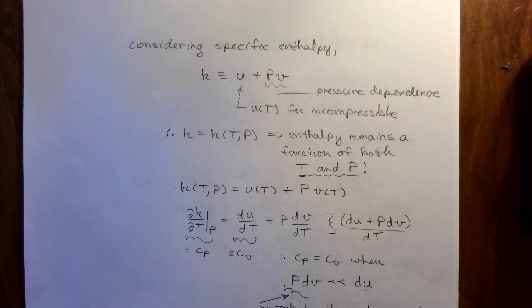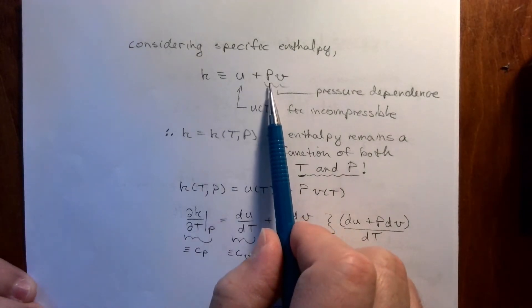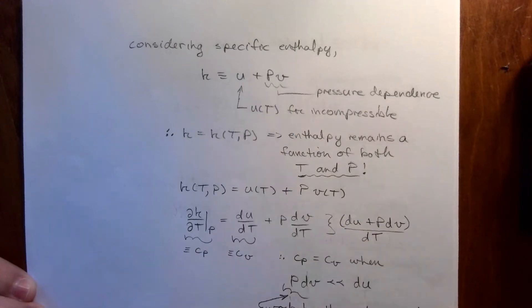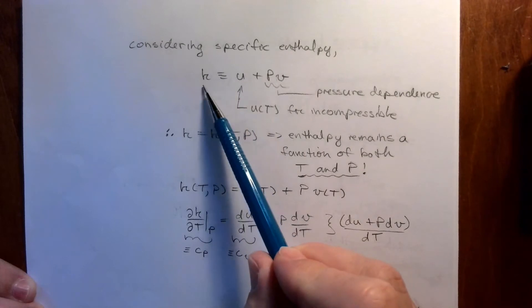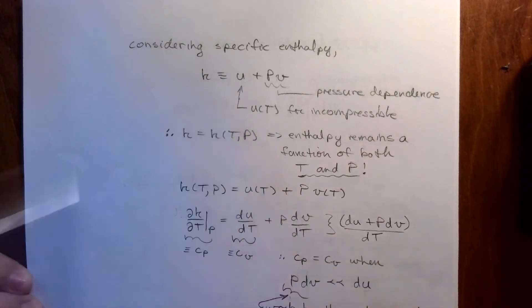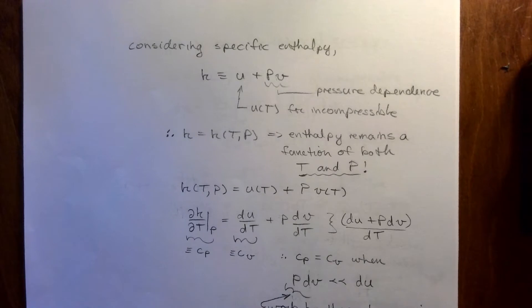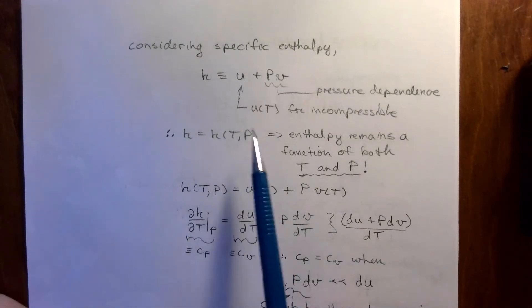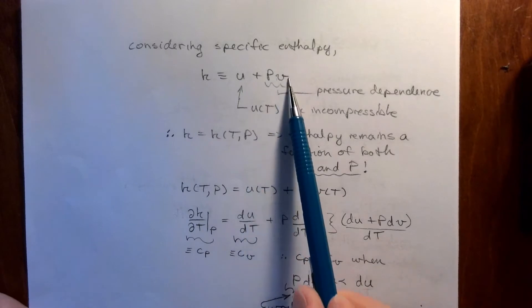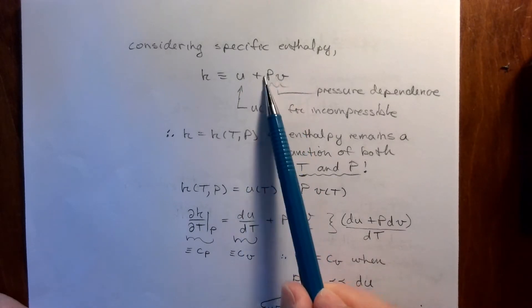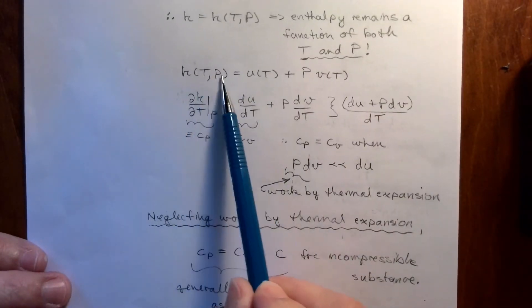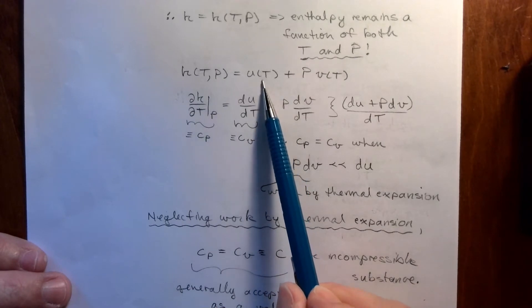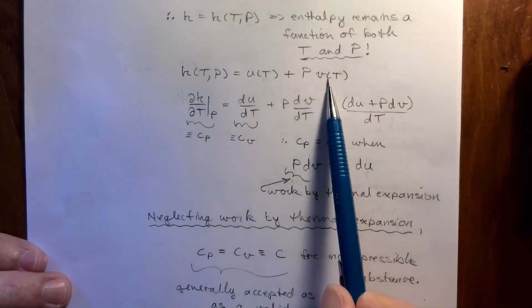Enthalpy by definition is U plus PV, so it's just a collection of other properties we're already familiar with. Anytime we want to calculate H, if we have U, V, and P we can substitute into this formula — we don't necessarily need separate charts for enthalpy. For incompressible substances, U is only a function of temperature and V is only a function of temperature, so the pressure dependence shows up in the P times V term. H is a function of temperature: U is a function of temperature plus P times V, which is a function of temperature.